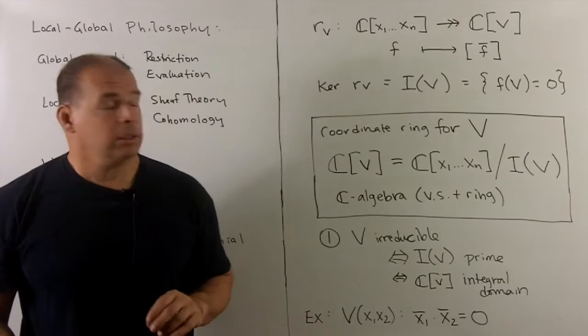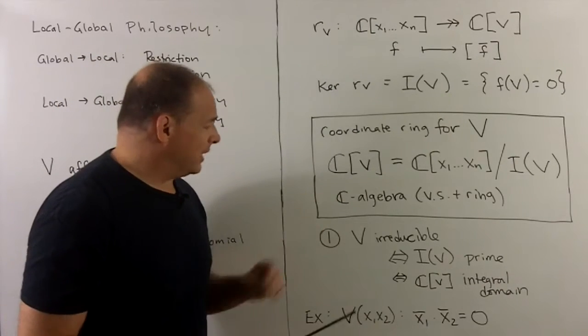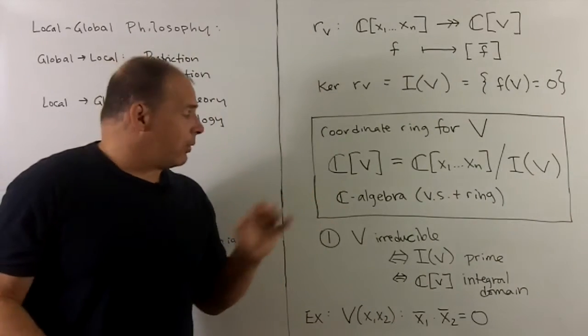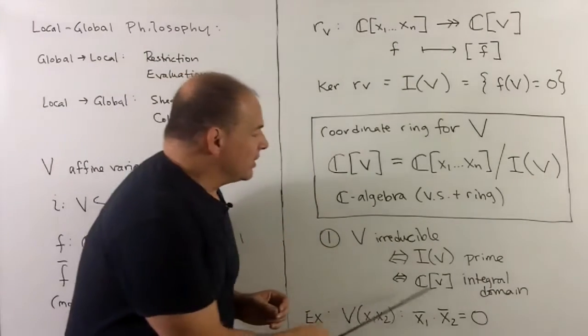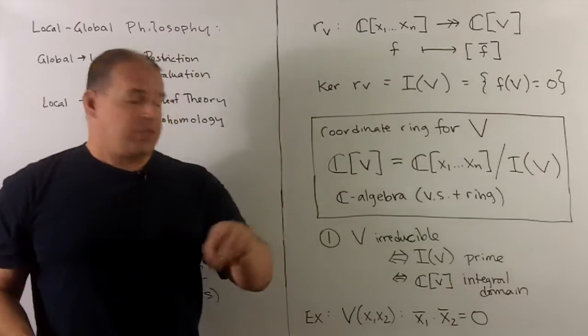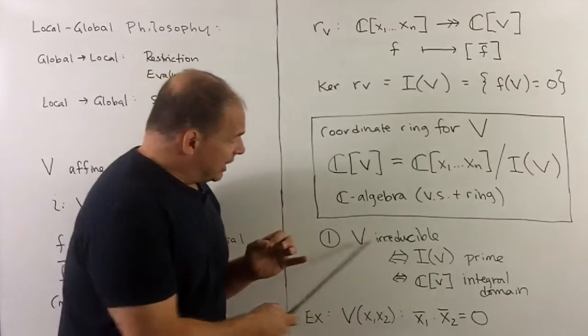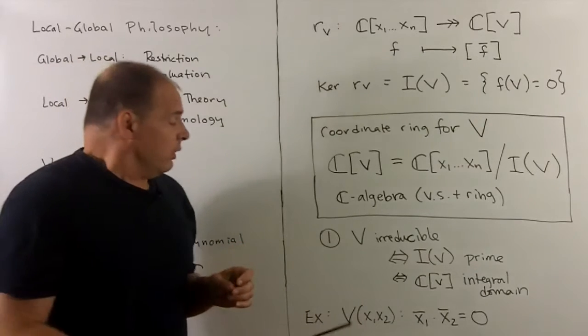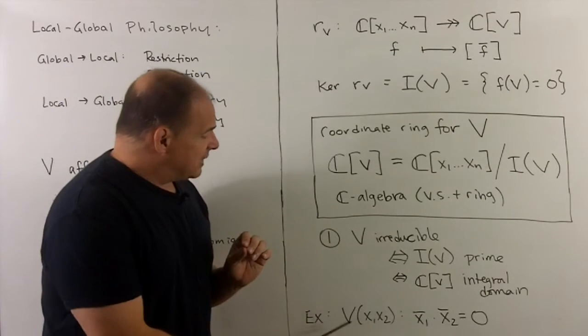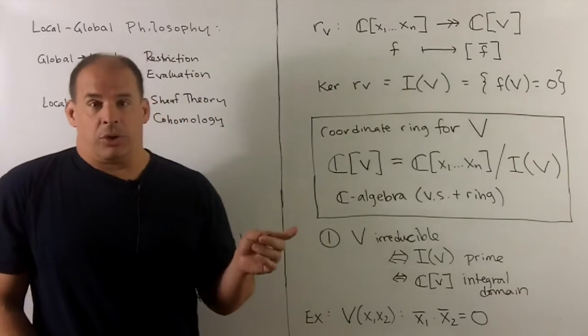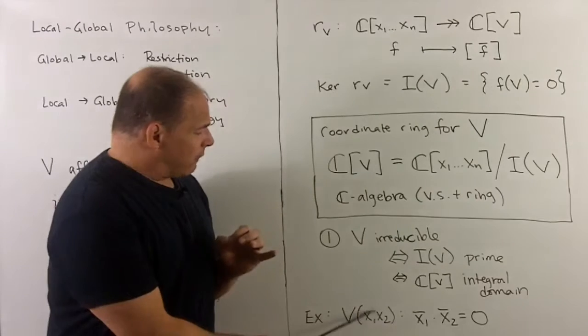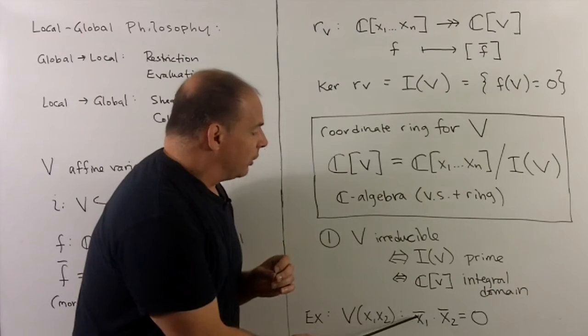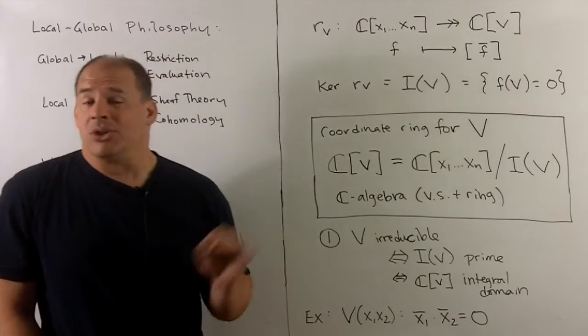A few things worth noting. First, V is irreducible. We noted that means that I(V) is prime. In turn, if we're quotienting out by a prime ideal, then the coordinate ring for V is an integral domain. So, we note this chain of ideas linking the geometry to ring theoretic properties. Okay, as an example, take the variety on the inside of C^2 given by X1 times X2, then this is not an integral domain. This is a reducible polynomial, so the variety that goes with it will be not irreducible. And we have zero divisors given by the classes for X1 and X2. We multiply them together, we get zero. So not an integral domain.